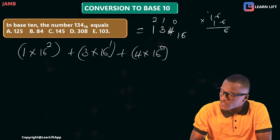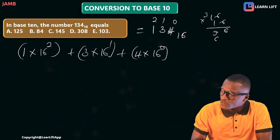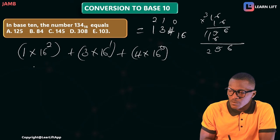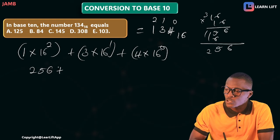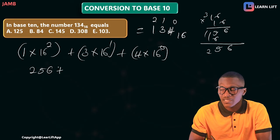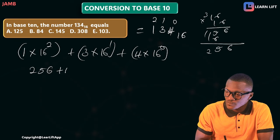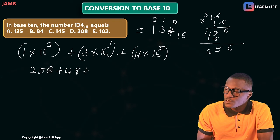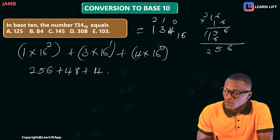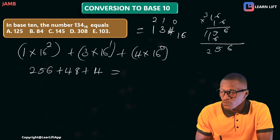16 times 16: 6 times 6 is 36, carry 3; that gives 96, carry — working it out, 16 squared is 256. So 1 times 256 is 256. Plus 3 times 16 is 48. Plus 16 raised to power 0 is 1, and 4 times 1 is 4.